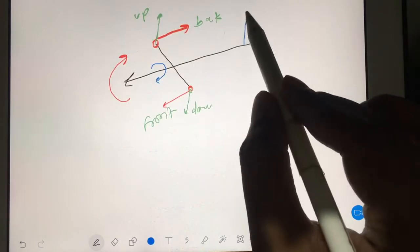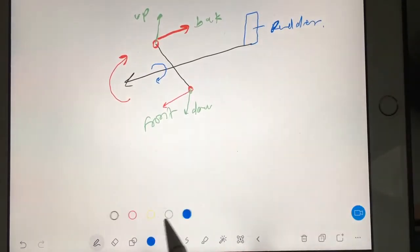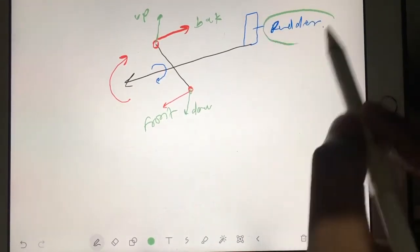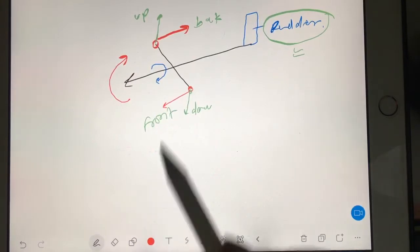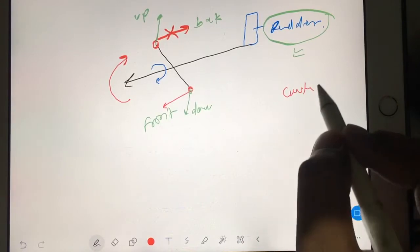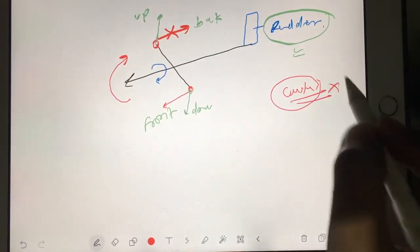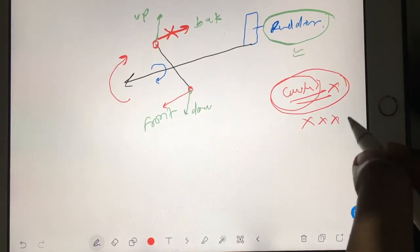Now you have rudder attached here. Now this rudder you have to deflect such a way that you can counterbalance. In English there is a word called counterbalance. Counterbalance word you will use where you want to diminish the extra effect.